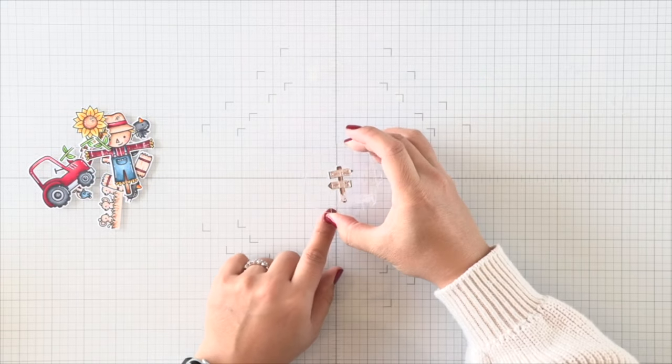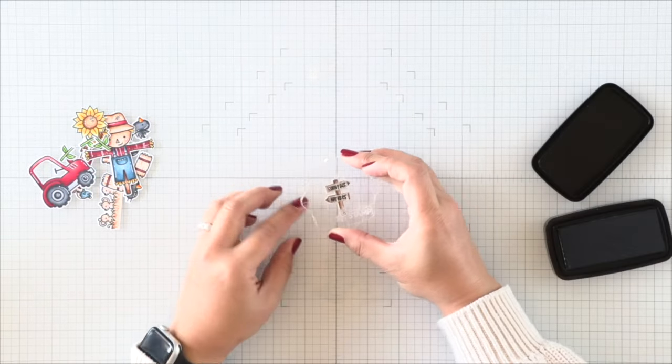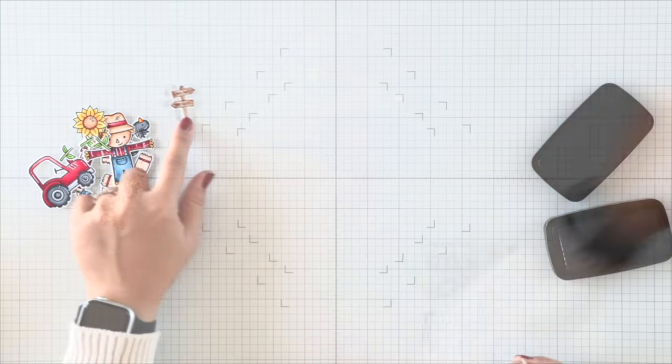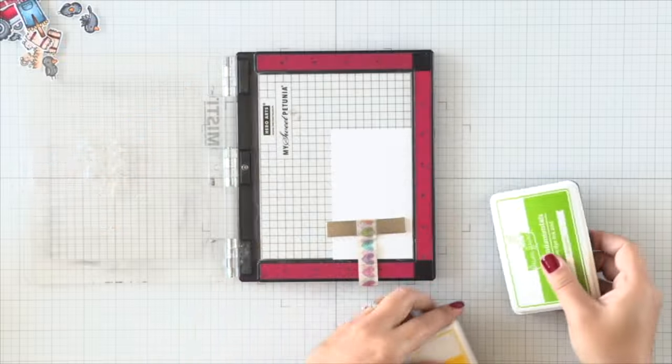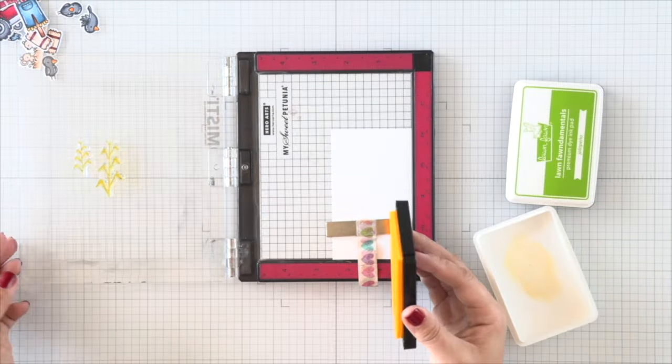And after I've added all my white gel highlights on all the images where I want them, I'll go ahead and push all my images aside as they dry and work on the next steps of my card. I'm going to stamp some sentiments here on the little sign indicating where the hay rides and corn maze is, and then that's going to be set aside to dry as well.